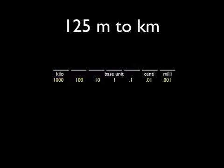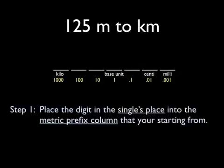Let's start doing the problem. The first step of three is to place the digit in the singles place into the metric prefix column that you're starting from. So, the first thing we have to do is identify what's in the singles place in the number 125. Good, it's the 5.